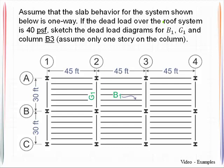This one happens to be for a roof system, and we're being told that this is behaving with one-way action. Specifically for a dead load of 40 pounds per square foot acting over the entire roof, we're being asked to come up with the load diagrams for beam B1. You'll notice that's a very typical beam located within the framing plan, and also girder G1, which is located right here, and then also the column that's located on grid line B3.